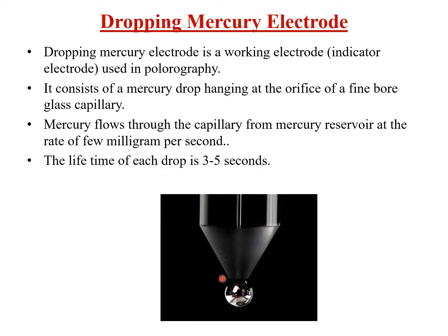As you can see in this picture, there is a mercury drop. A new mercury drop is formed through this capillary at a time interval of three to five seconds — every three to five seconds a new mercury drop is formed from the capillary at the orifice of the fine bore glass capillary.